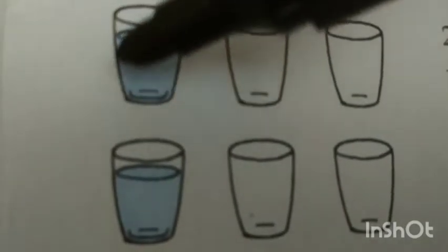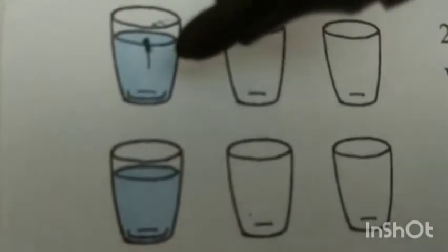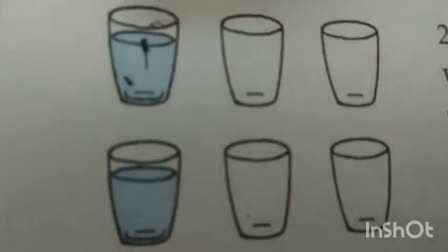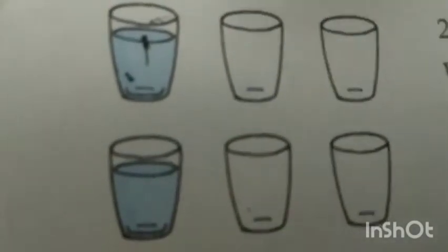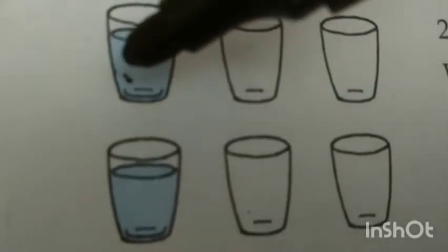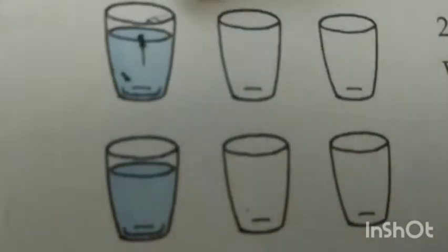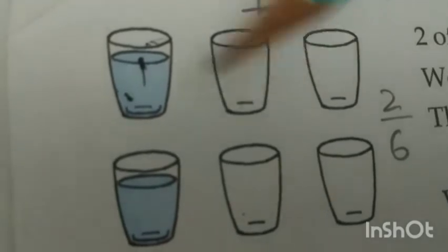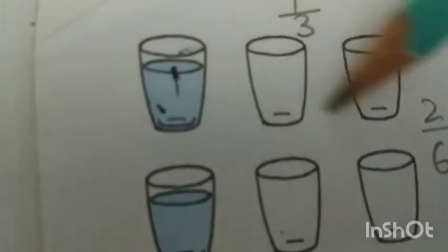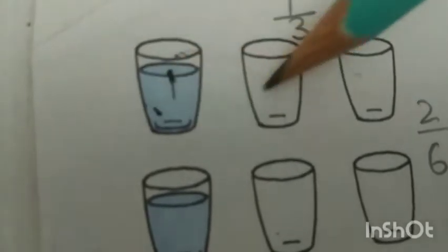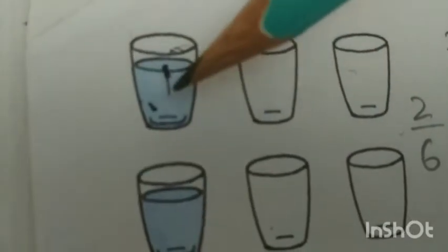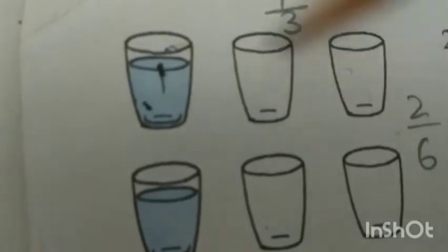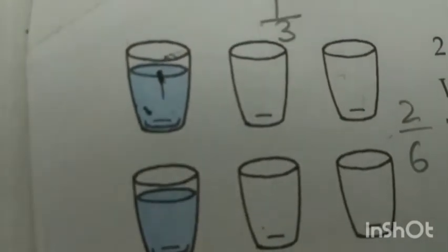See this figure — two of the six glasses have water. And we can say one of every three glasses have water. So if we find the fraction of the filled glass out of three glasses, it will be one upon three.